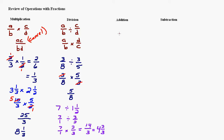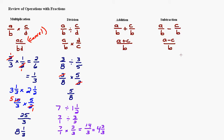For adding and subtracting, the basic rule is: A over B plus C over B equals A plus C over B, and A over B minus C over B equals A minus C over B. The key is you have to have the same number on the bottom — the same denominator. If the denominators are already the same, for example 5 eighths plus 2 eighths, you just add the numerators: 5 plus 2 over 8. The more work comes when you don't have the same denominator.